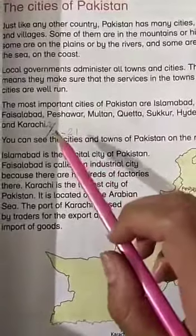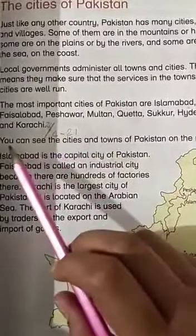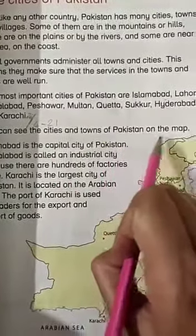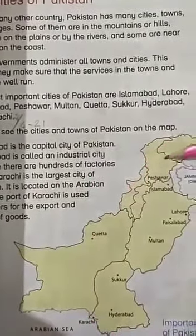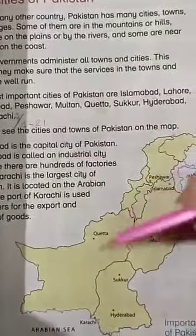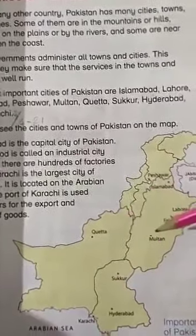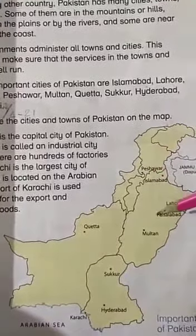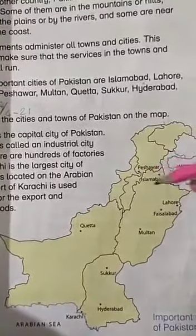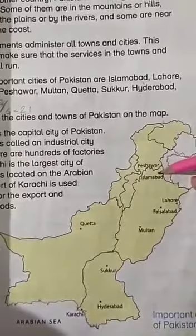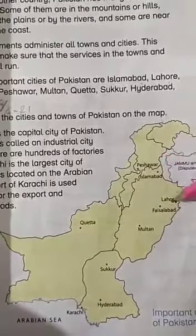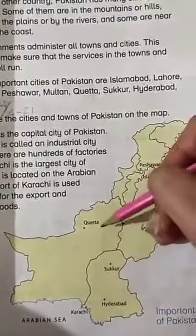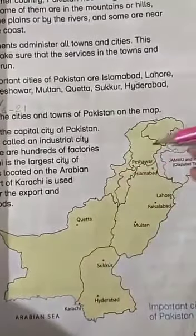You can see the cities and towns of Pakistan on the map. Students, on the map you can see Pakistan's towns and cities, just as I showed you in the last lecture — you can see Islamabad, Lahore, Faisalabad, Multan, Sukkur, Hyderabad, Quetta, Karachi, and Peshawar marked on Pakistan's map.